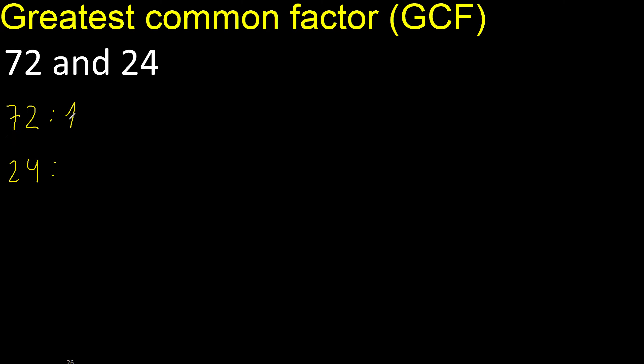Factors. Always start with 1. 72 divided by 1 is 72.